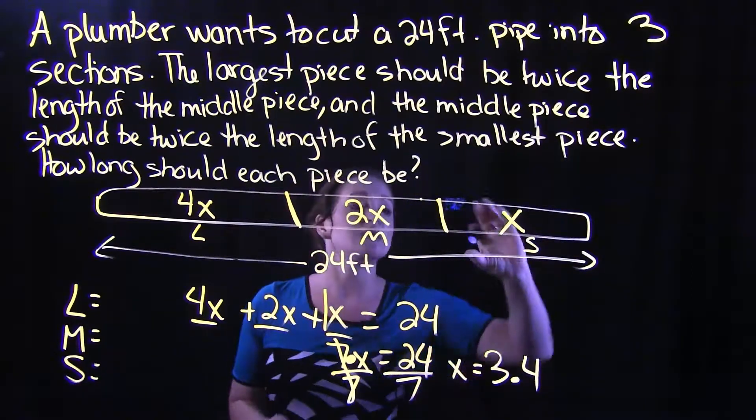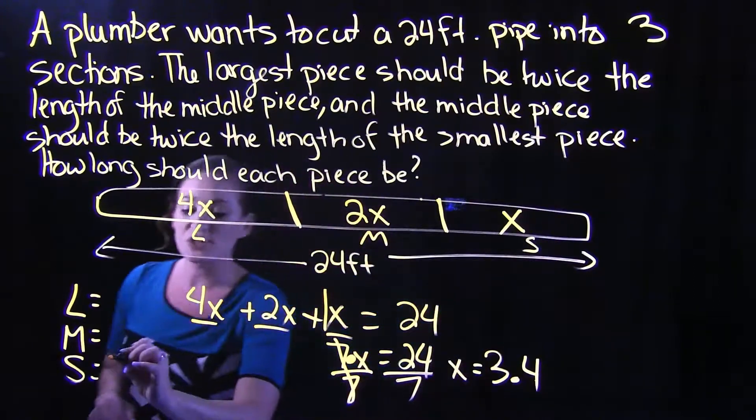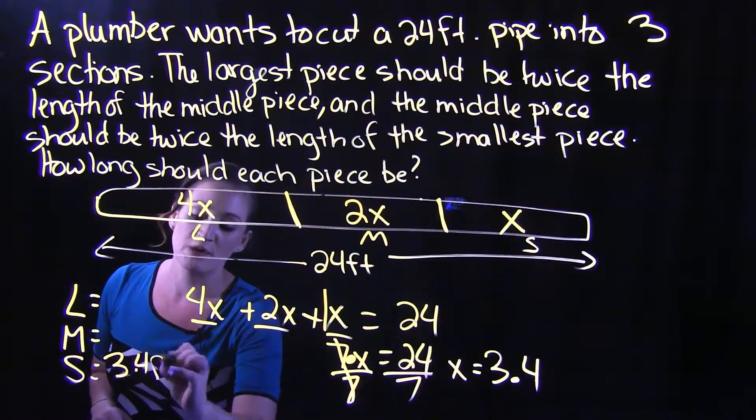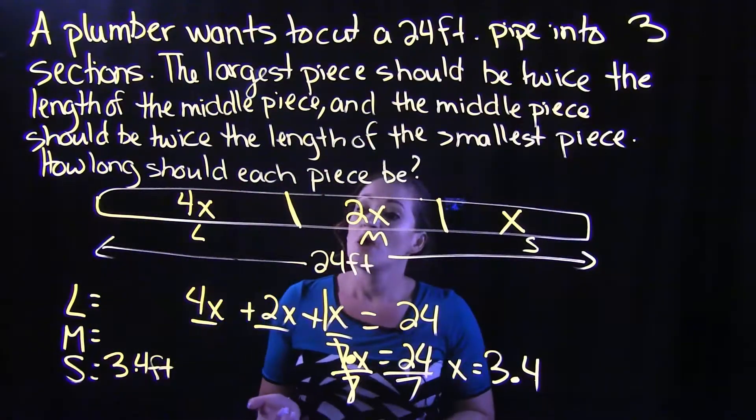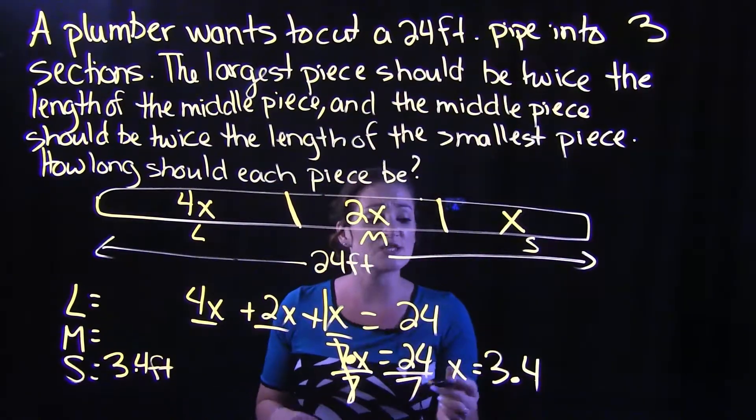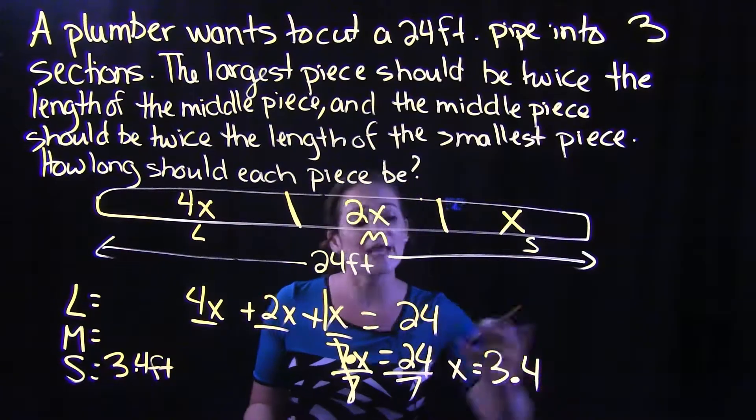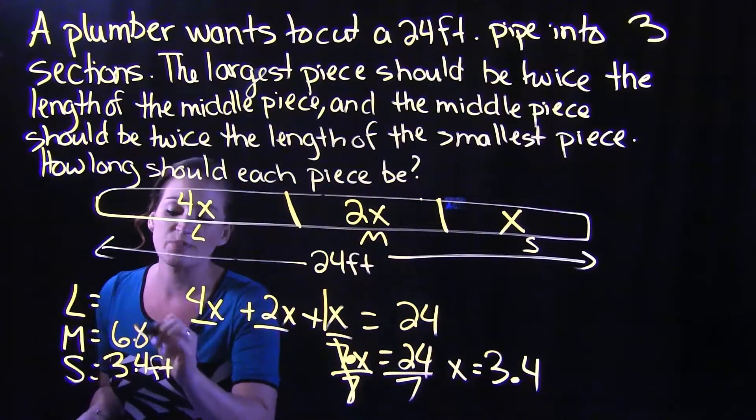So X represents the small piece. We said the small piece is X. So we know that the small piece is 3.4 feet. So the medium piece is 2 times X. So if we take 3.4 and multiply it by 2, we get 6.8. So the middle piece is 6.8 feet.